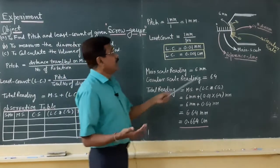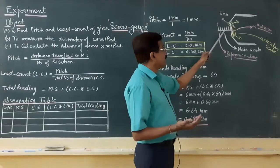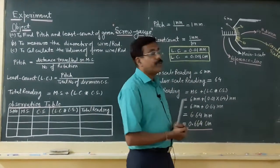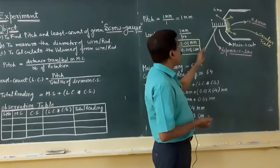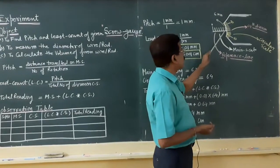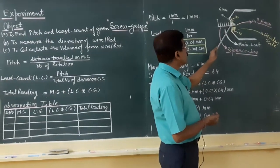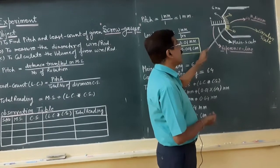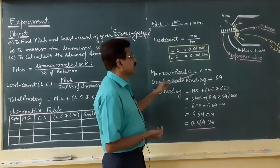For example, suppose a rod is fitted and the main scale and circular scale are in a certain position. Looking at the main scale, we can see 1 mm, 2 mm, 3 mm, 4 mm, 5 mm, 6 mm clearly — the 7th division is not visible. This means the 6th division is exactly crossed by the edge of the circular scale, so 6 mm is the main scale reading.